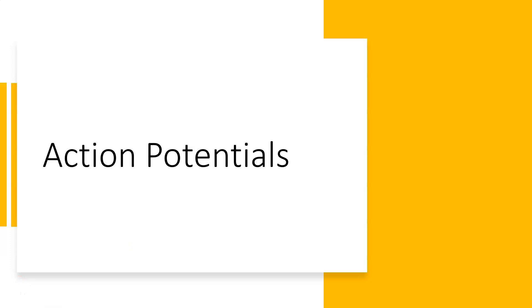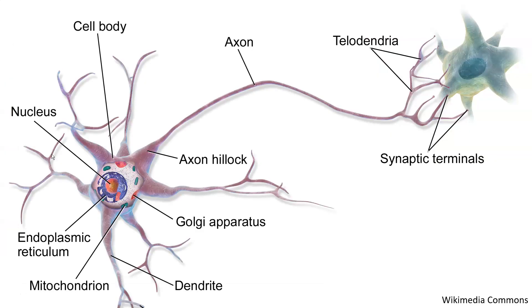Hey there, and welcome back. I hope you're ready to apply your knowledge about membrane potentials. Today, we will be talking about the mechanism of how neurons send a message down its axon. This happens through electrical signaling, i.e., the movement of ions across the axon membrane. But before we get into specifics, let's take a look at an overview of neuronal signaling.